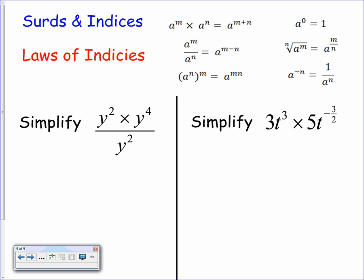We're first of all looking to simplify an expression: y squared times y to the power of 4, all over y squared. This one's fairly straightforward. Let's go through our process of using the rules.